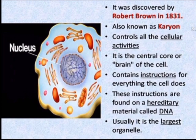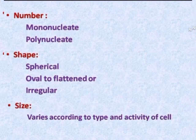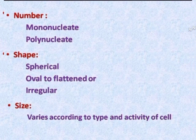Generally, there is a single nucleus per cell. They are known as mononucleated cells. But more than one nucleus can be found in certain cells, and they are known as polynucleated cells. There are variations with respect to the shape of the nucleus also — it may be spherical, oval to flattened, or irregular in shape.